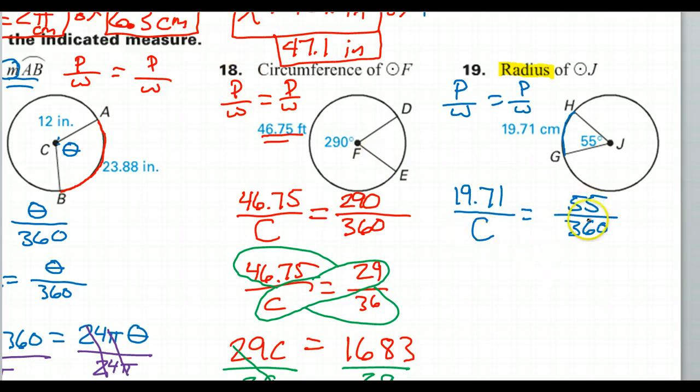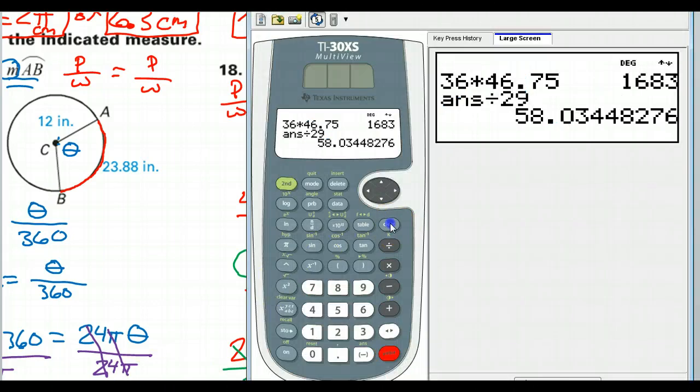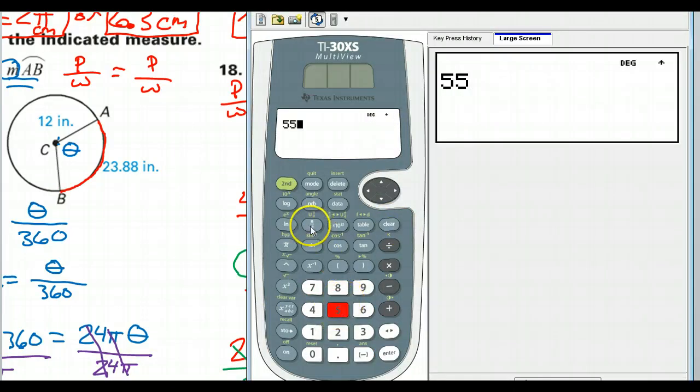So don't use X. Let's cross-multiply. First, let's reduce this, 55 over 360. That's 11 over 72. Let's use that.